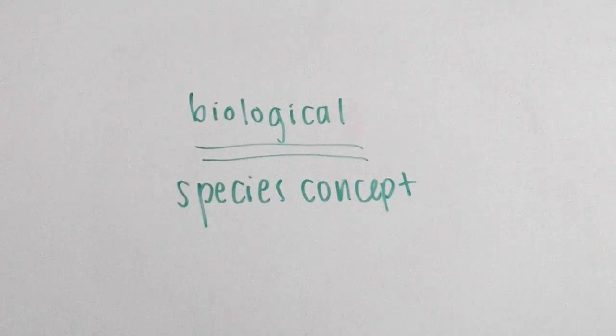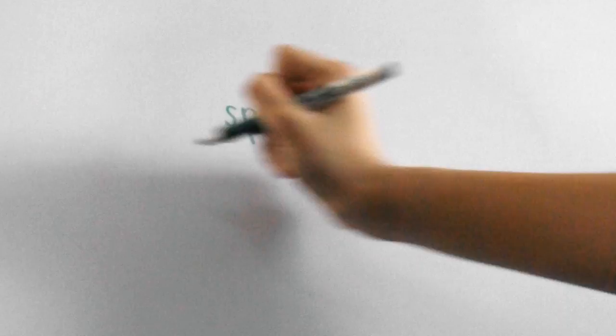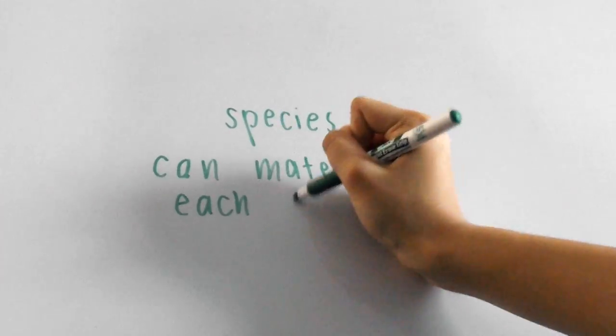This states that a species is a group of populations with individuals that can successfully mate with each other, producing viable and fertile offspring.